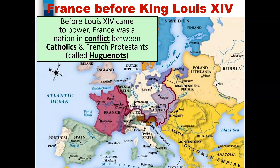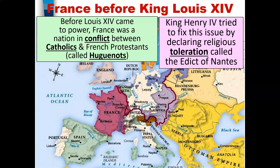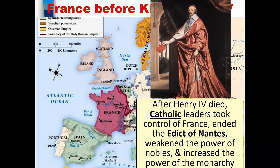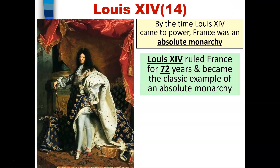How was France before King Louis the 14th came to power? Before Louis the 14th, France was a nation in conflict between Catholics and French Protestants, also known as Huguenots. King Henry the Fourth tried to fix this problem by declaring religious toleration, which was called the Edict of Nantes. After Henry the Fourth died, Catholic leaders took control of France, ended the Edict of Nantes, weakened the power of the nobles, and increased the power of the monarchy.